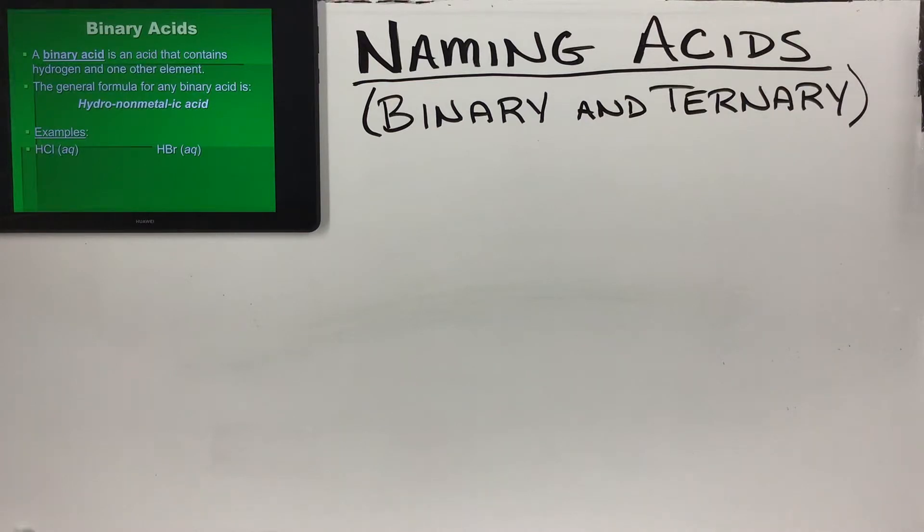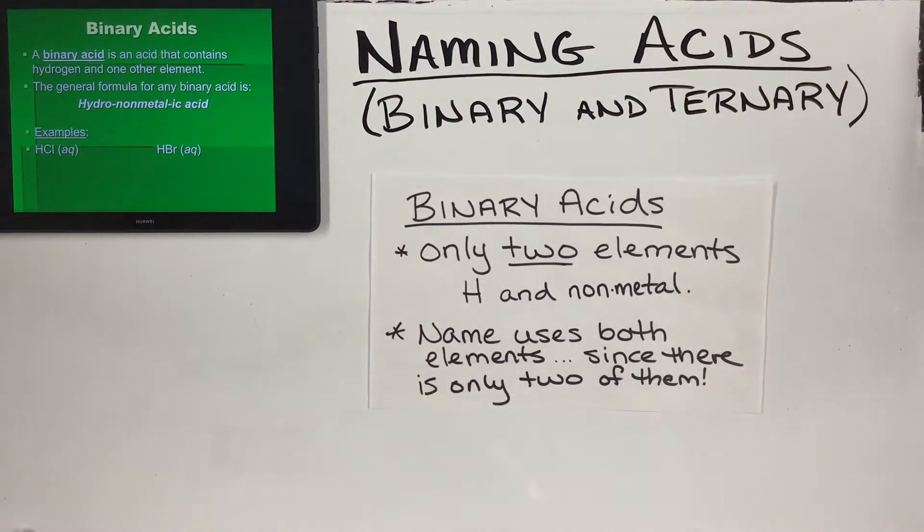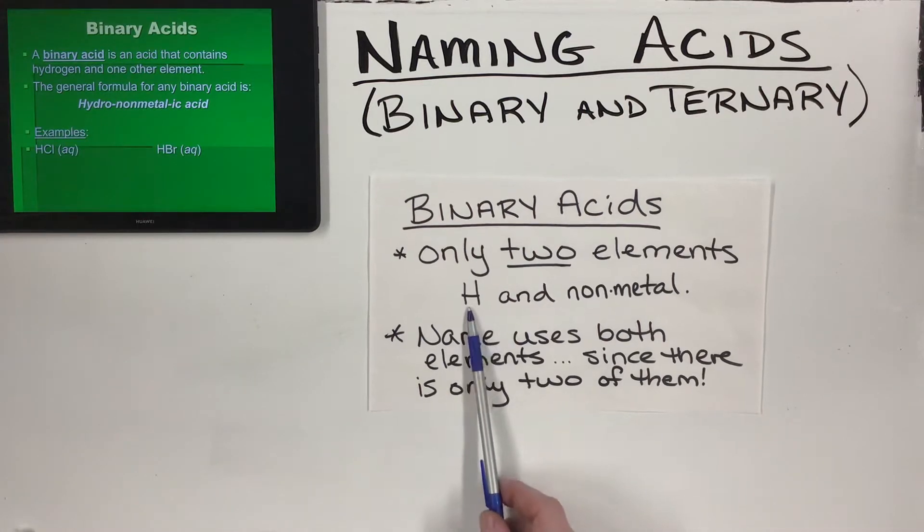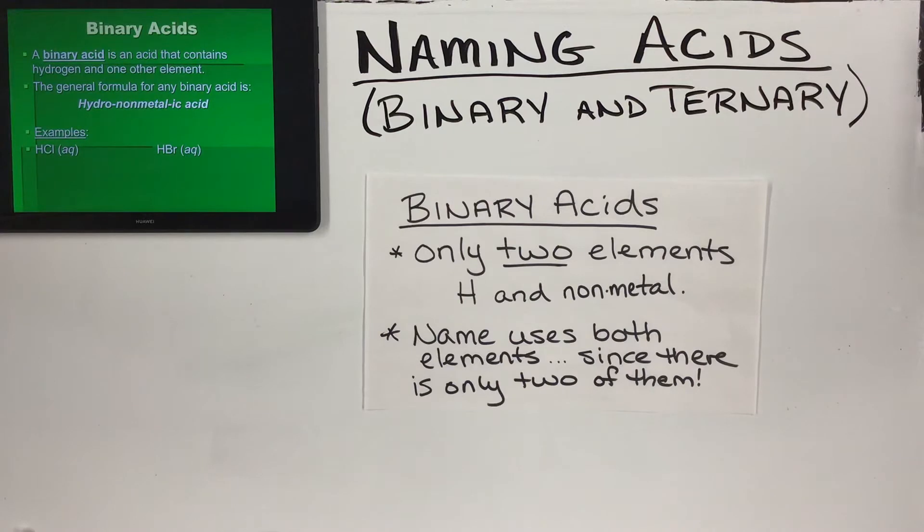A binary acid is called binary because it only has two elements involved in it - it has hydrogen and a nonmetal. The names of these acids use both of the elements in their name.